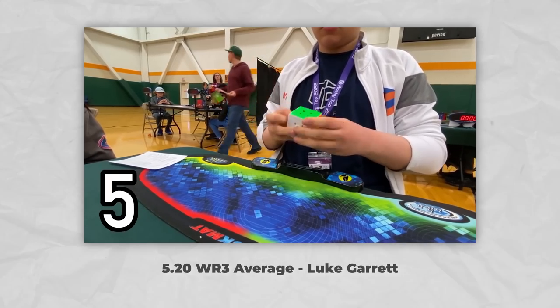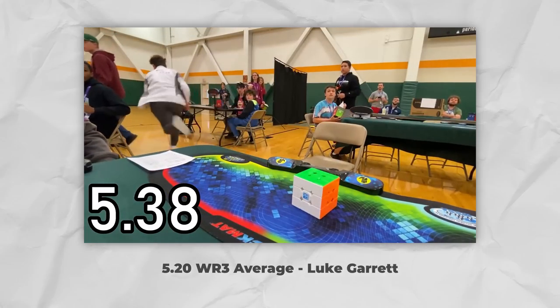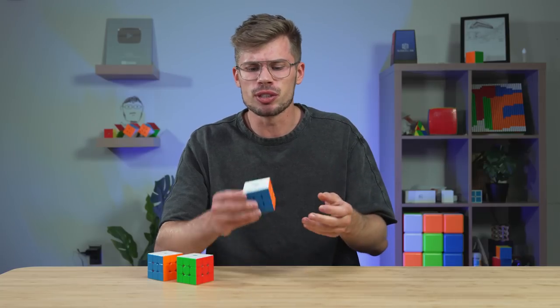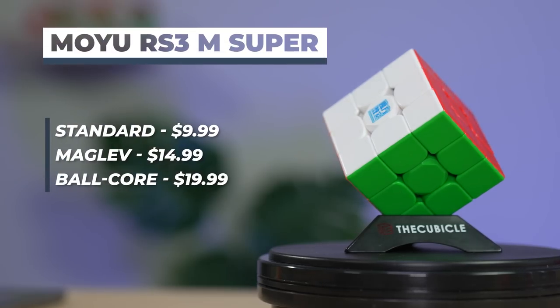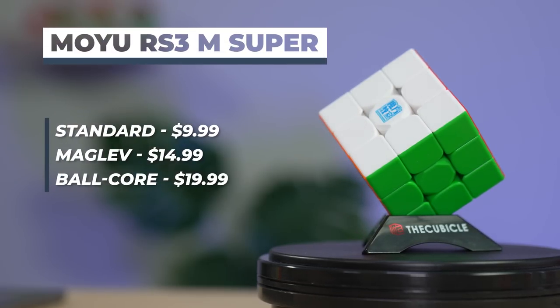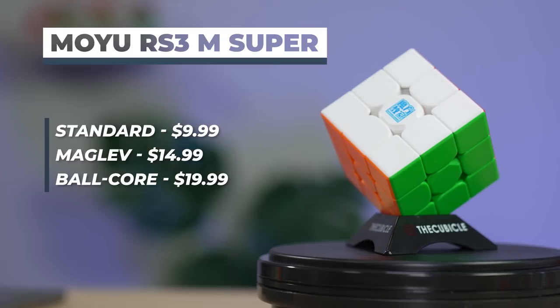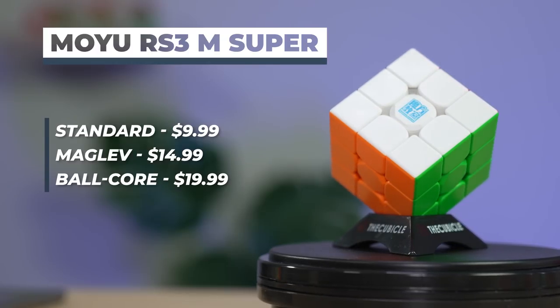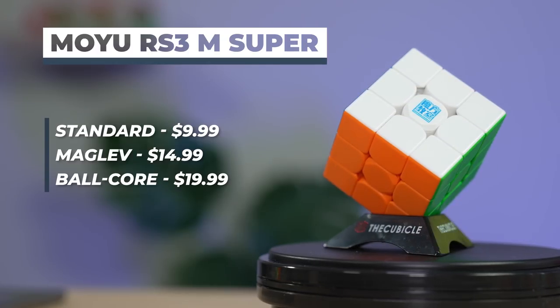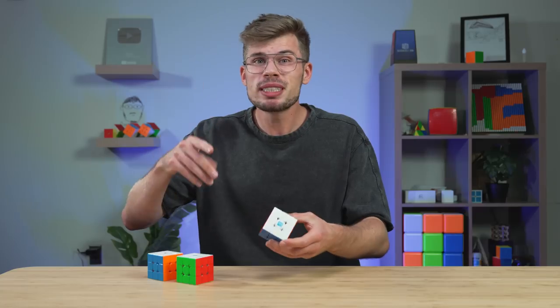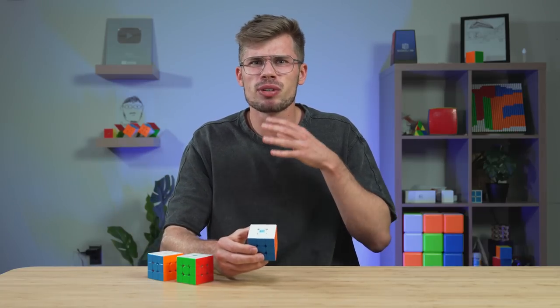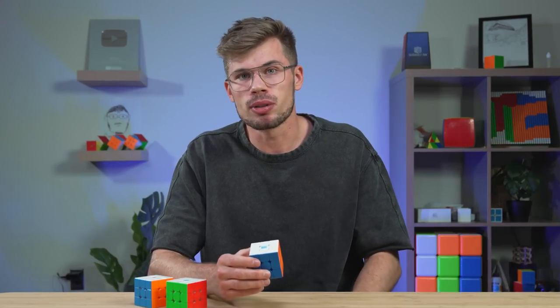which brings me to the second point. There are actually three versions. We have the standard one, which is actually the pick for this video. You also have this version with Maglev. And you have the version with Core Magnus, the Balkor version, which is more expensive. That's why I didn't get the spot for the best valued cube. But overall, the RS3 Super is just an amazing release. So,